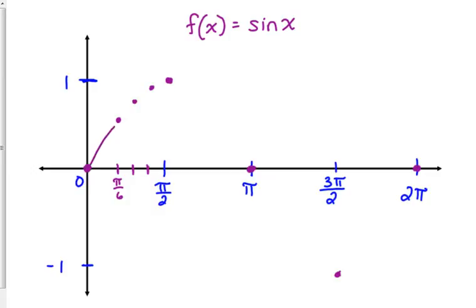We could fill in this graph in a little bit more detail, but pretty much, I'm just going to tell you what happens. We get this curve that goes up to 1, and then the curve comes back down right here to 0 at pi, and then it comes right here to 3 pi over 2, and then it comes back up to 0 at 2 pi.